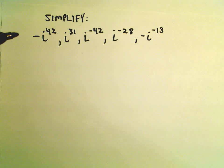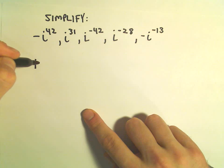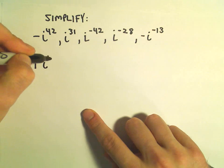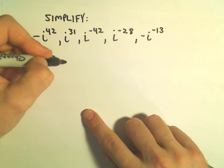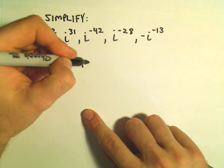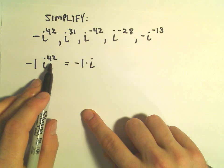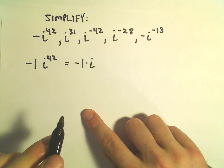So in the first one we have i to the negative 42. I'm going to write that as negative 1 times i to the 42nd. And again, I'm thinking first off, is 42 a multiple of 4? And well, I don't think 4 goes into 42 evenly.